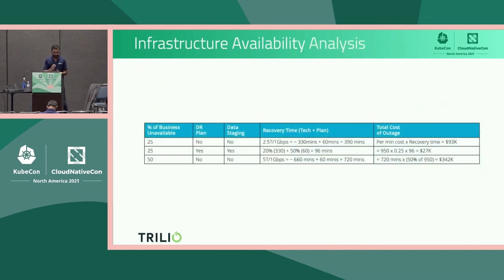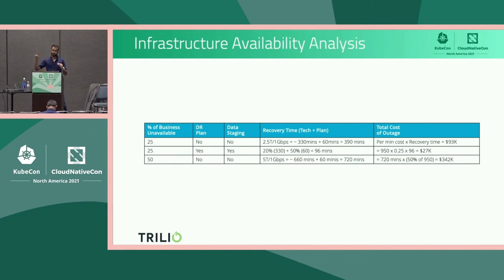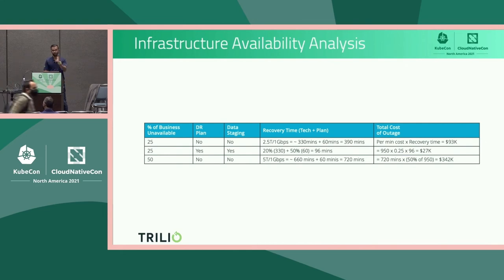From an analysis point of view, let's say Acme has 25% of their business go down. Looking at it from two angles — with DR planning and data staging versus without — from a recovery time perspective, it's 390 minutes versus 96 minutes. From a cost translation, taking the $500 million revenue down to a per-minute cost, that is equal to $93K versus $27K. If 50% of the business was unavailable, the cost for Acme would have been $342K. There's an exponential factor — the more parts of your business are down, the worse it gets. It definitely makes sense to have a solution that can help with DR planning and DR data staging. Let's keep this $342K number in mind for 50% business outage, as we'll use that for the last piece of the conversation.